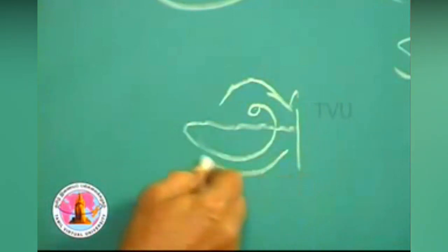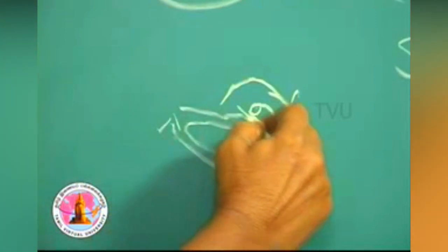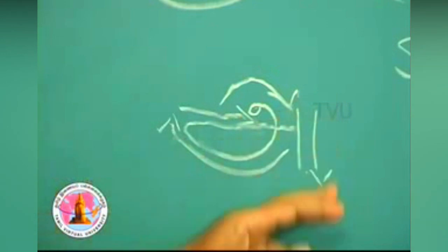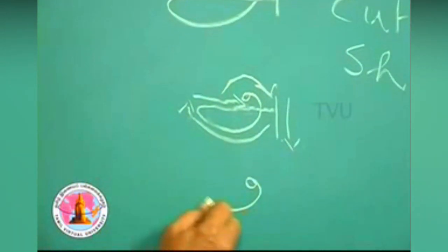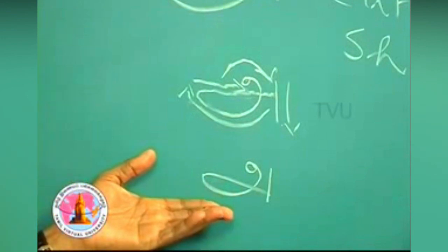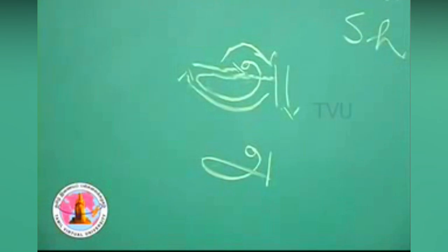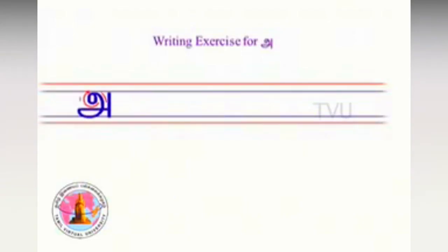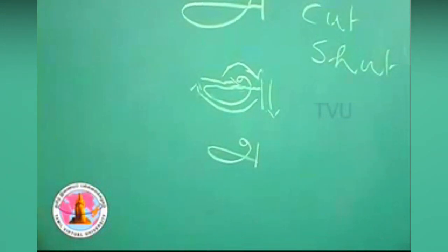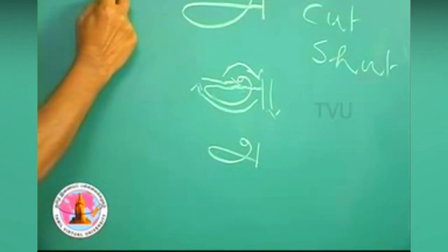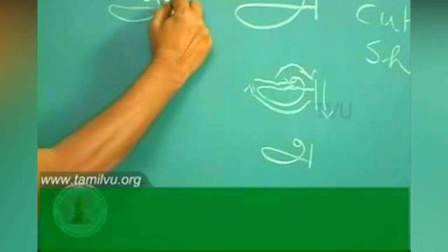It proceeds like this, goes up, then stretches itself, and ends with a vertical line from top to bottom. Once again we will see how to write it. Start with a circle, stretch it, go down, extend it, and end. This is 'அ'.